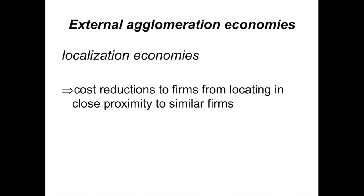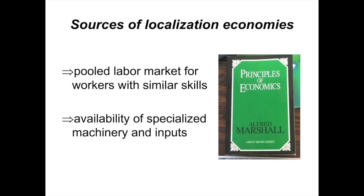If the collection of businesses is in the same industry — that is, if you have an industry cluster — the benefits are called localization economies. Localization economies are a form of external agglomeration economies, or simply put, cost savings from locating in close proximity to other similar firms. The sources of localization economies are also noted in a different video as some of the benefits of industry clusters.